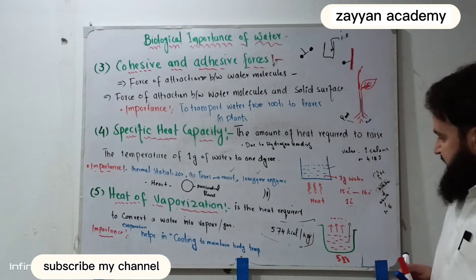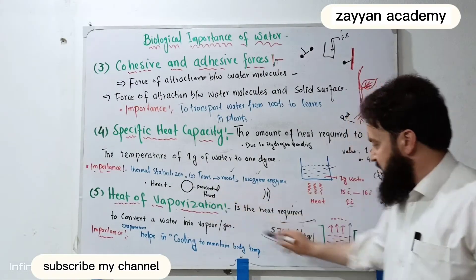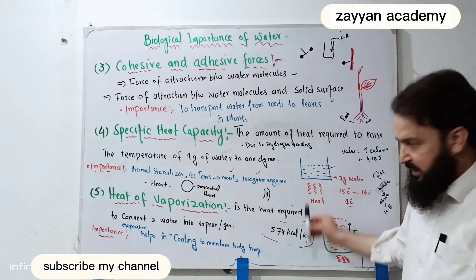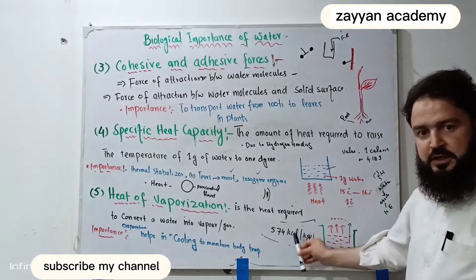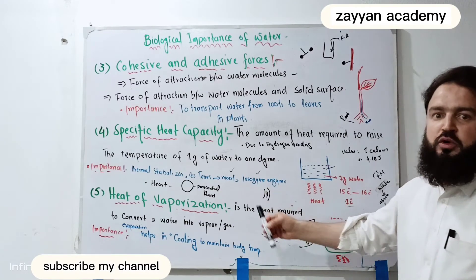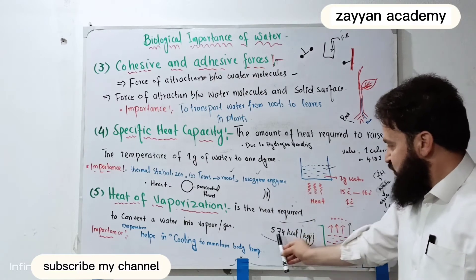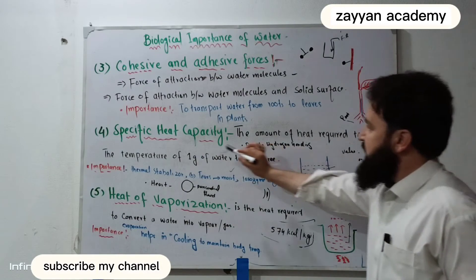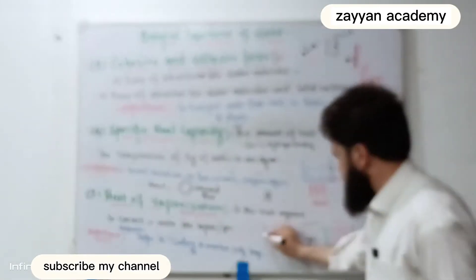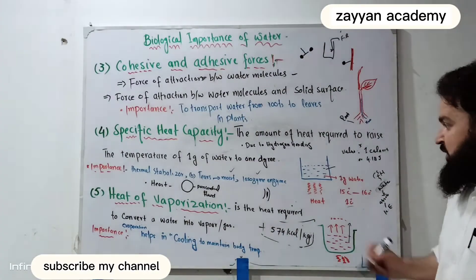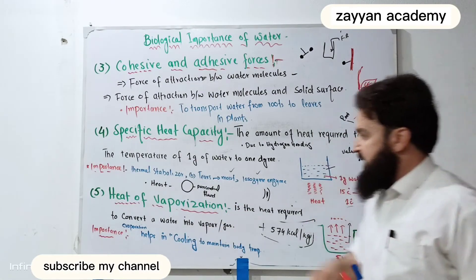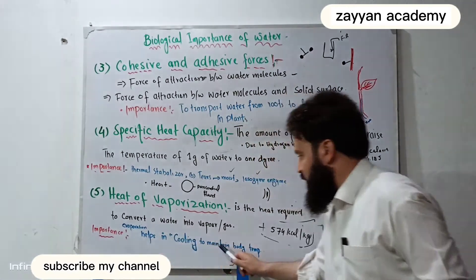The heat of vaporization means that 1 kilogram of water, if you change it to vapor or gas, requires 540 kilocalories of energy. The importance to the body is that you need to evaporate it — evaporation helps in cooling to maintain body temperature.